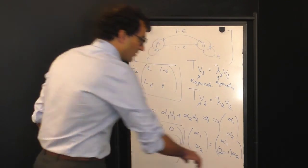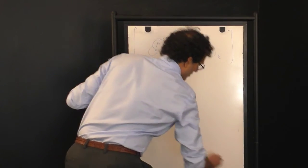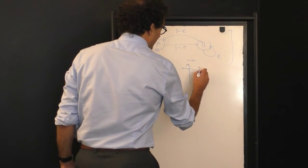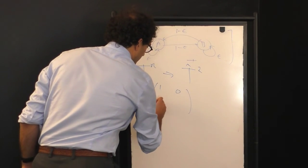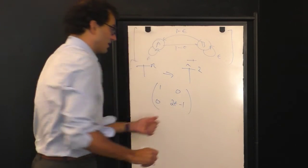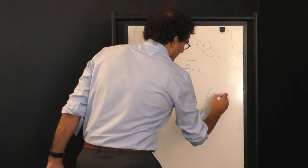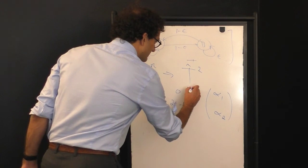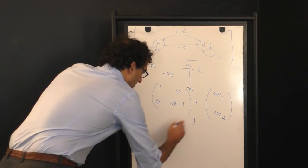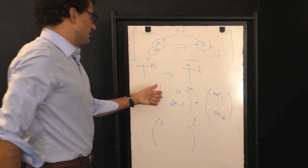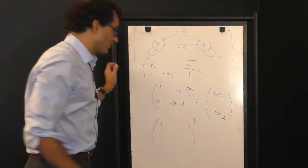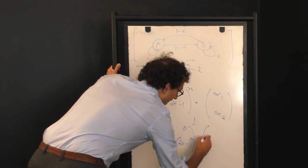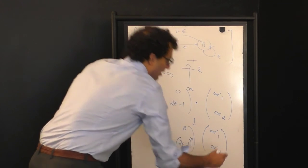So now we've reduced the problem of taking T to the n to the problem of taking T hat to the n, where T hat is 1 on the diagonal and then 2 epsilon minus 1 here, and that is now acting on this transformed representation of the probabilities of being in state A and B. If we raise this here to the power of n, this matrix takes a very simple form. This first diagonal term, of course, 1 to the power of n is just 1. The off-diagonal terms remain 0. And now you have 2 epsilon minus 1 to the power of n, again, acting on the transformed representation.